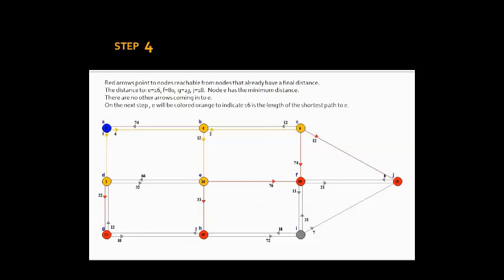Step 4: Red arrows point to nodes reachable from nodes that already have a final distance. The distance to E is equal to 16, the distance to F is 80, and the distance to G is 18. Node E has the minimum distance, which is 16. There are no other arrows coming into E. Node E will be colored orange to indicate that 16 is the length of the shortest path to E.